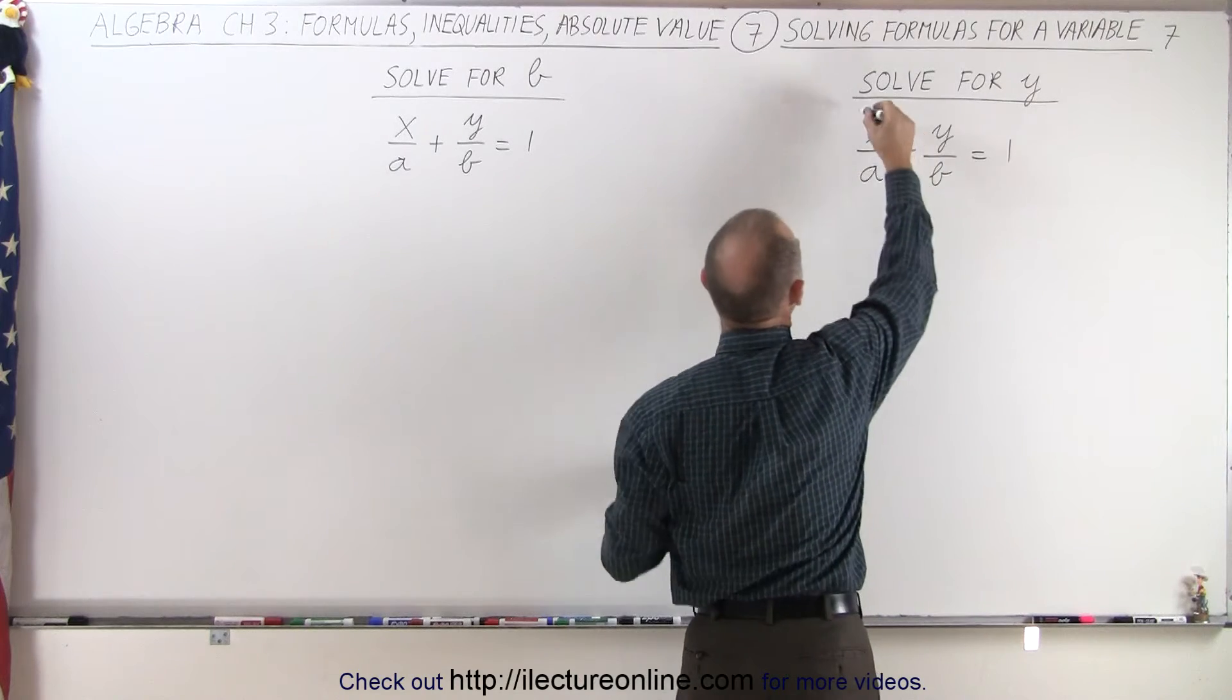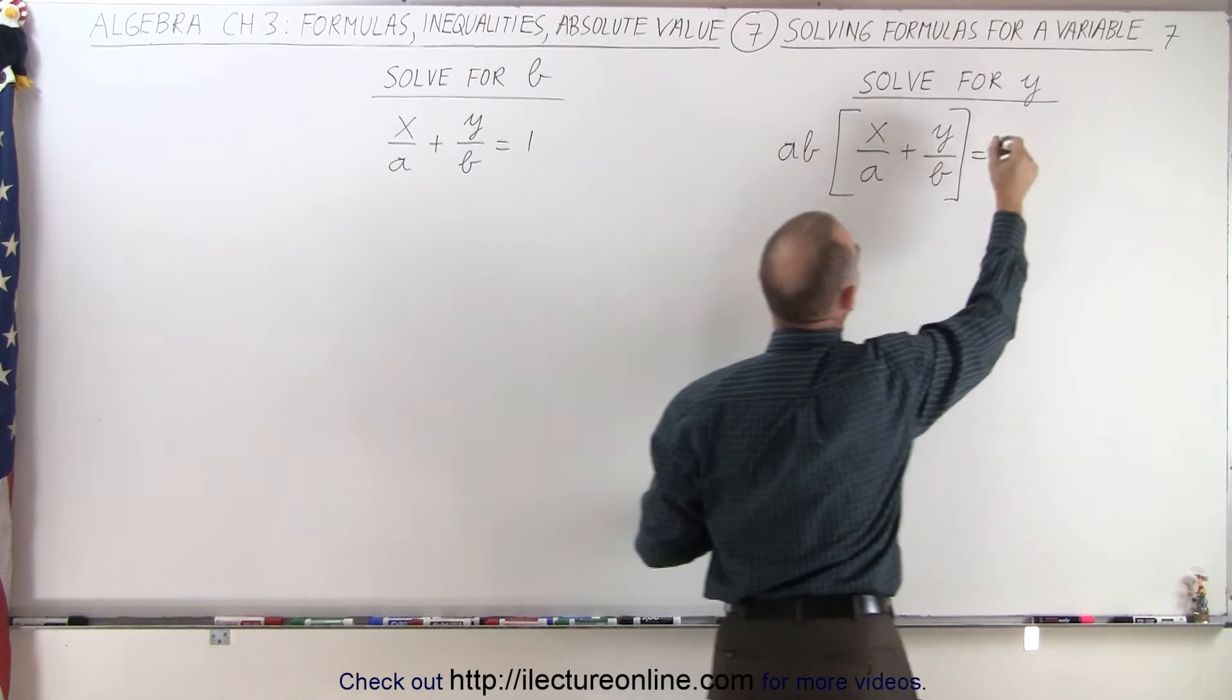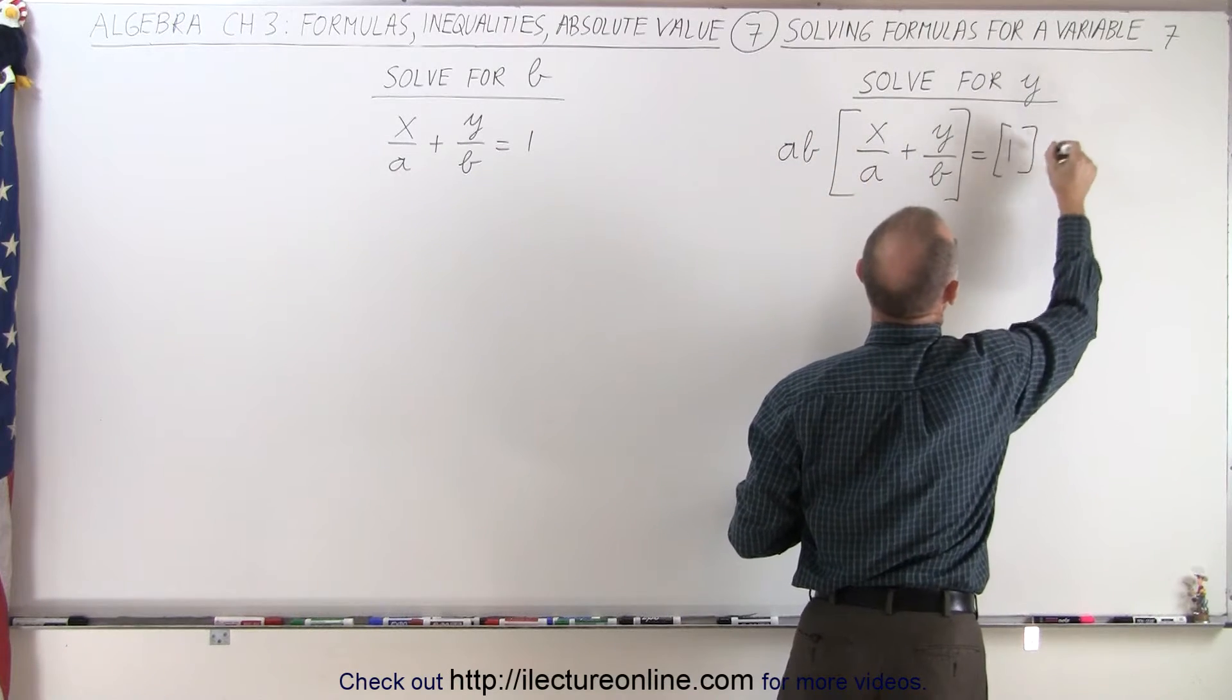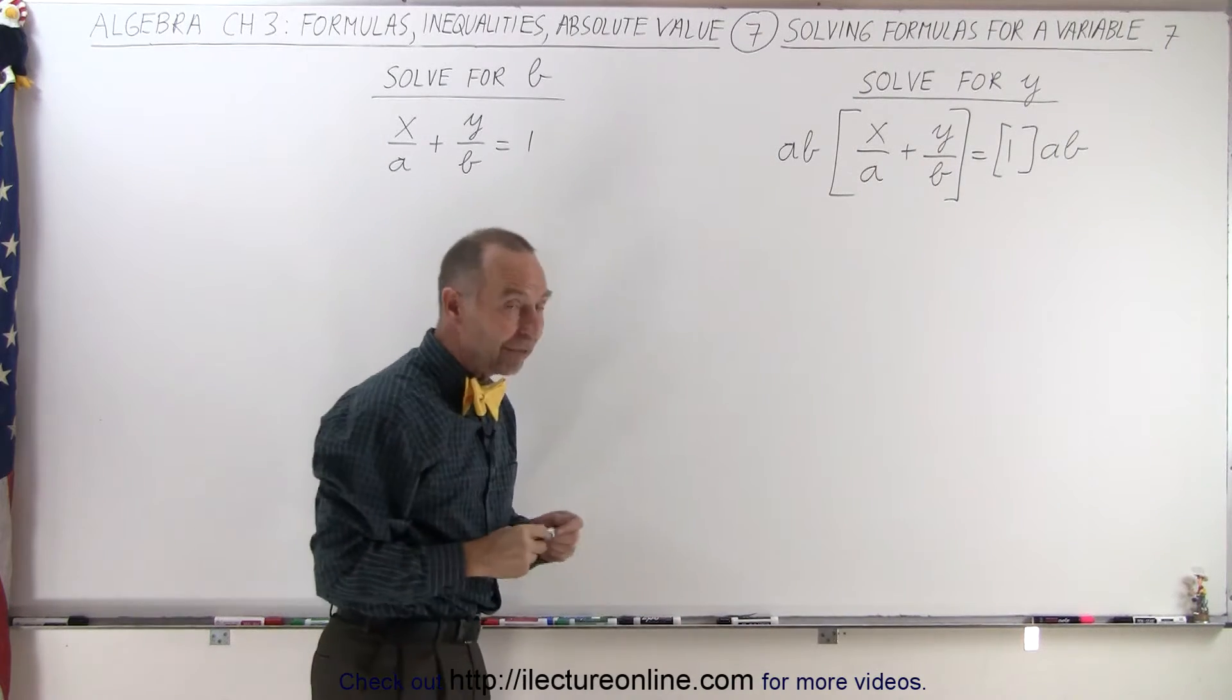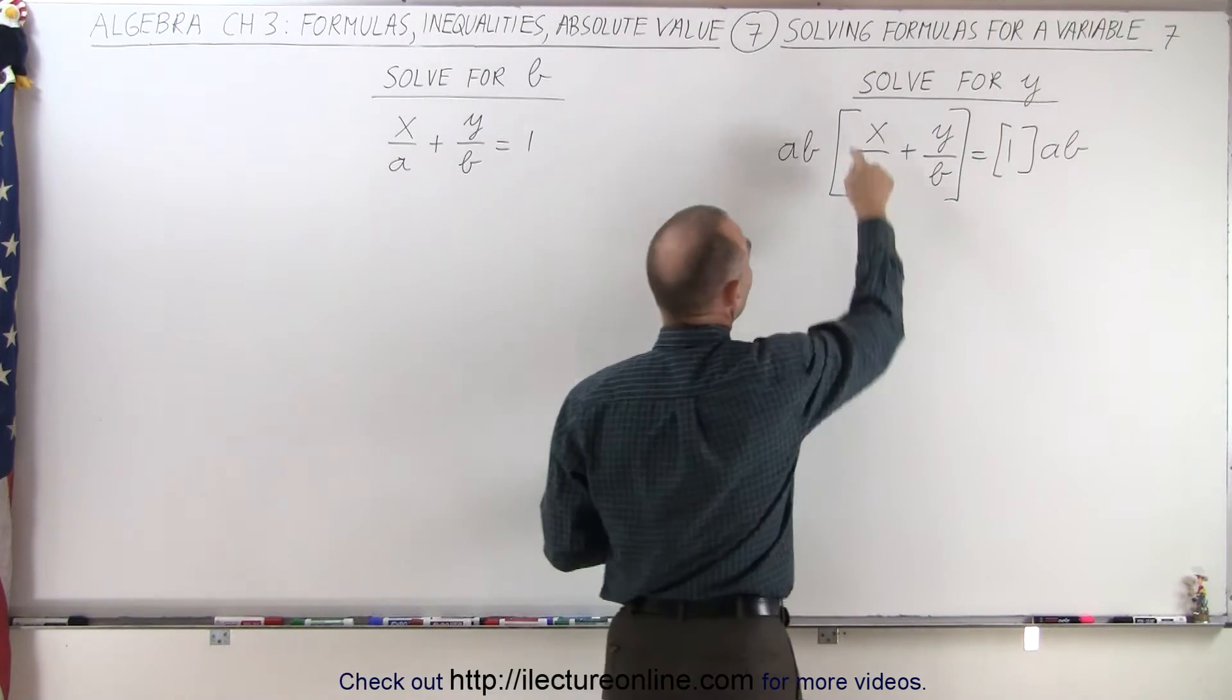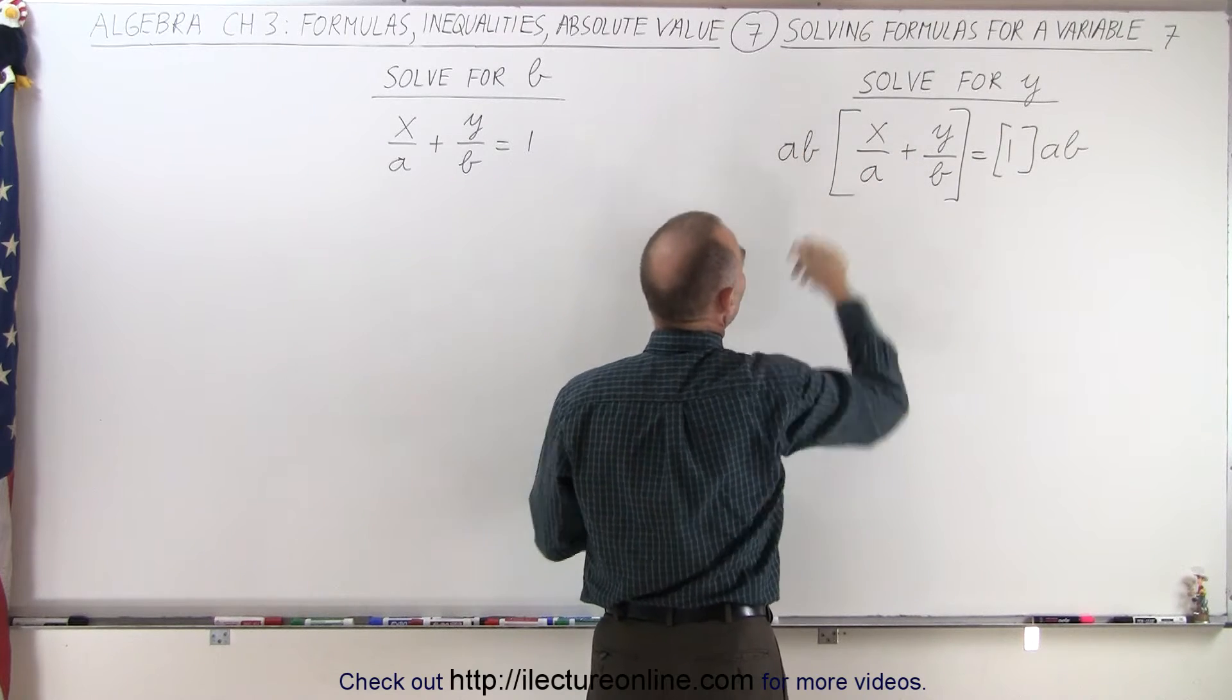Which means on the left side I multiply this times a times b, and on the right side I multiply that times a times b. Alright, on the left side, notice when we multiply x over a times ab, the a's will cancel, and we end up with b times x.